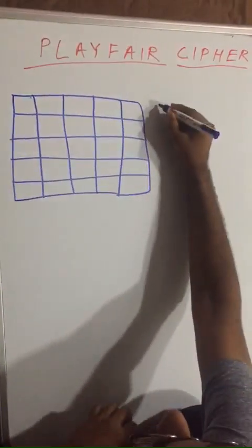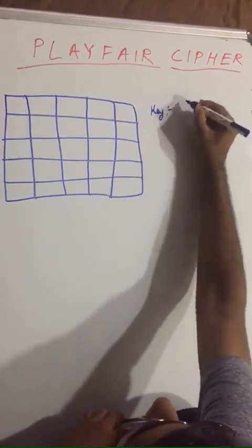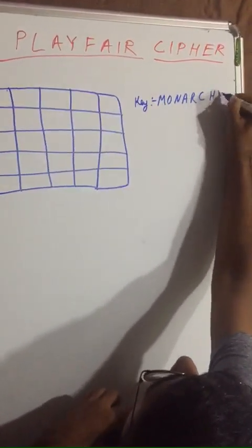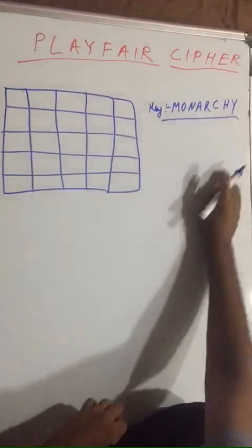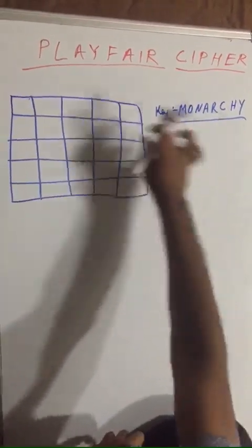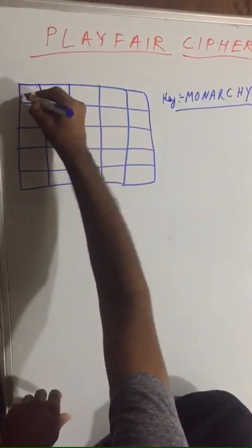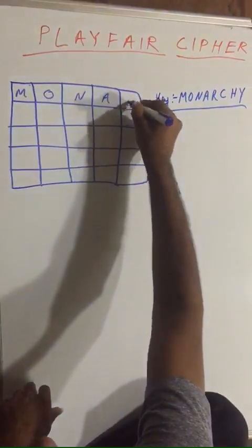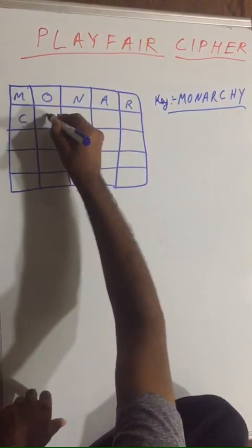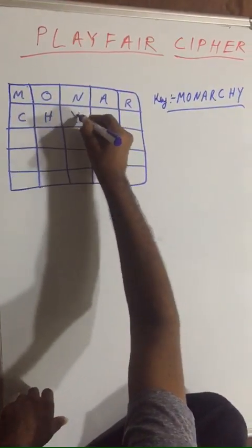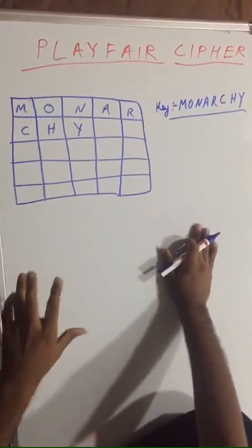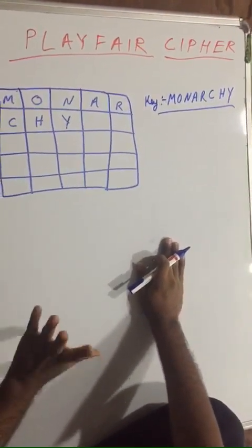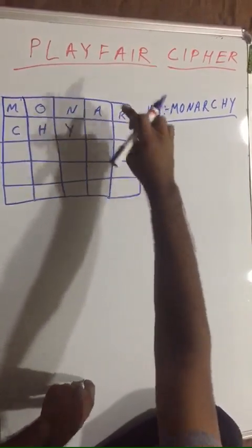The next rule is that we would be given a key — let us say the key is 'monarchy'. You have to put this key into the five-by-five matrix first. So we place M, O, N, A, R, C, H, Y. After placing the given key, we have to place the remaining alphabets. Starting from A — A is already in it.